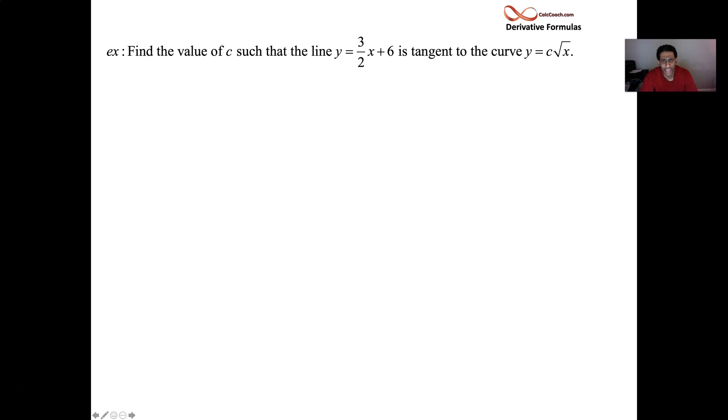Question number two. Here's a line, y = (3/2)x + 6, and here's a function, y = c√x. And I would like that line to be the tangent line. This is a little weird. Usually we're trying to find a tangent line; here we have the tangent line and we're trying to find the function. Well, we have part of the function. The function is y = c√x. For a special value of c, this will be the tangent line.